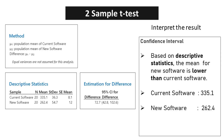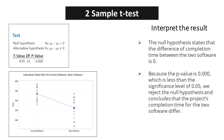Uncheck Assume Equal Variances. Based on descriptive statistics, the mean for new software is lower than current software. The null hypothesis states that the difference of completion time between the two software is zero. Because the p-value is 0.000, which is less than the significance level of 0.05, we reject the null hypothesis and conclude that the project's completion time for the two software differ.